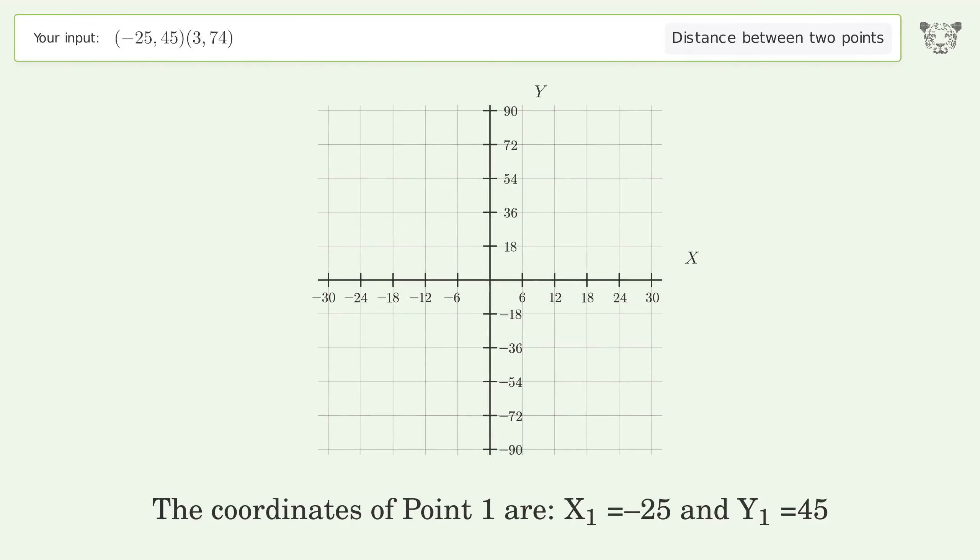The coordinates of point 1 are x1 equals negative 25 and y1 equals 45. The coordinates of point 2 are x2 equals 3 and y2 equals 74. d is the distance between the two points.